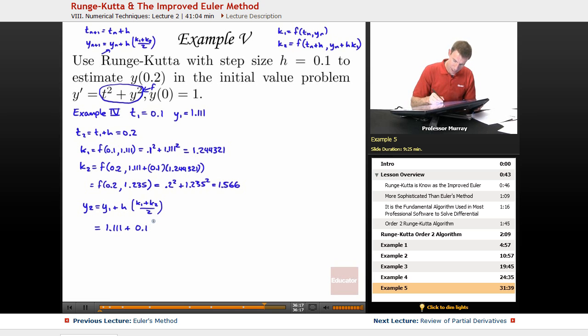Now, my h is still 0.1, and my k1 is 1.244, my k2 is 1.566. Got all those numbers saved in my calculator now. And now I'm just going to simplify the decimals.